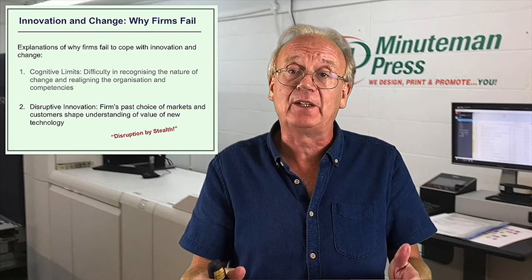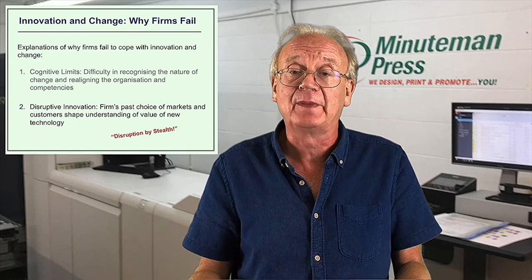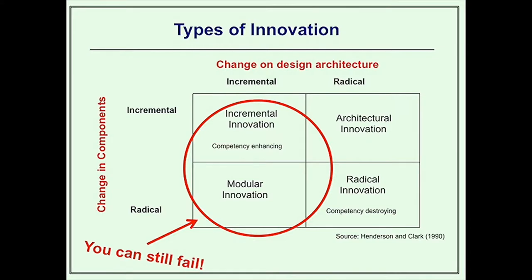In this view, firms fail because they make perfectly rational choices about how to respond to their customers and stakeholders. Effectively, disruption with this theory happens by stealth. Going back to Henderson and Clark's model, this theory suggests that in certain situations firms can still fail even though the change is in components. The firm will recognise the change but rationally see that change as not being significant and therefore not waste resources in responding to it. Firms are responding rationally to external pressures in their ecosystem.